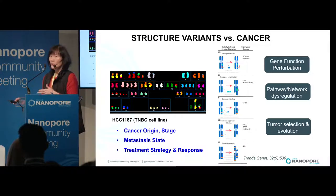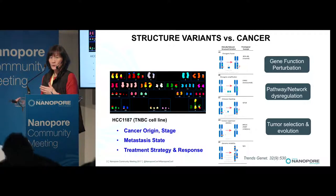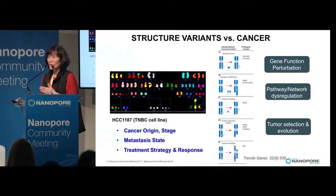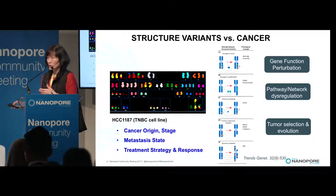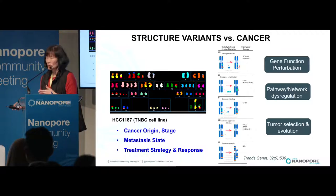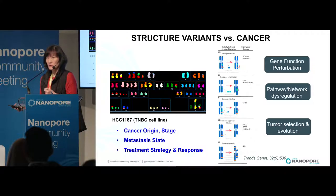Gene-specific structural variation changes inform cancer type or cancer therapy. However, growing evidence has shown that if you integrate collective structural variations, they can better inform because they perturb specific gene pathways or networks — collective dysregulation. With that, you can use these tools to study tumor selection, tumor evolution, and inform further metastasis states and treatment strategy. Therefore, we believe a comprehensive structural variation cancer genome will move into clinical cancer genomics applications.